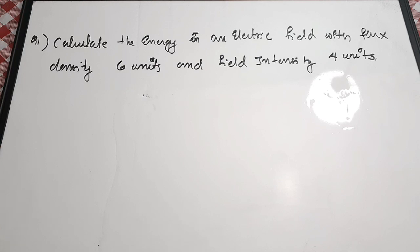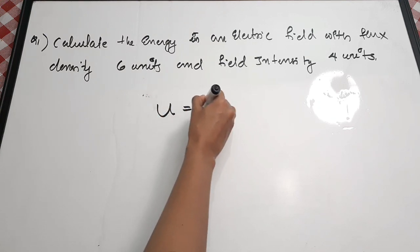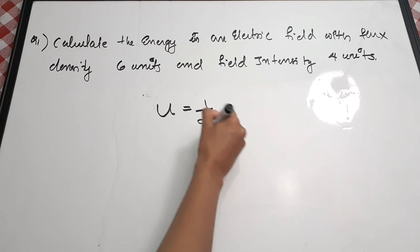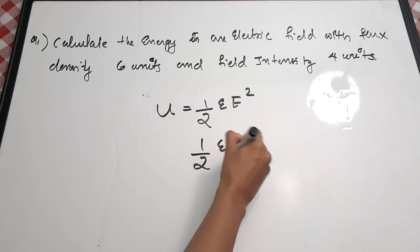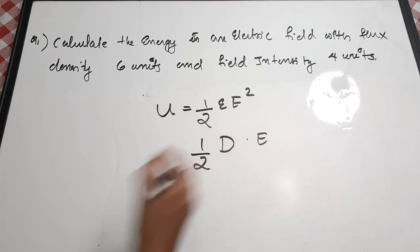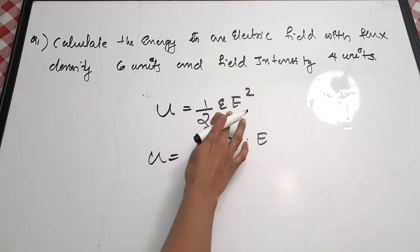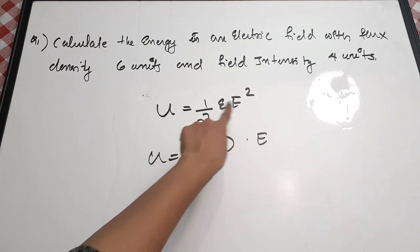The first question is: calculate the energy in an electric field with flux density 6 units and field density 4 units. You need to find energy. The equation for energy is U — you can use U or W to represent energy. U = ½εE², or you can write U = ½D·E, since epsilon times E equals flux density D.